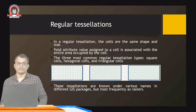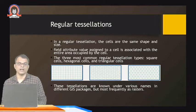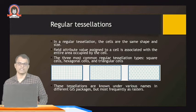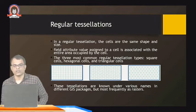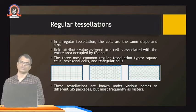There are two types. The first is regular tessellation — in regular tessellation the cells are of the same shape and size, and the field attribute value assigned to a cell is associated with the entire area occupied by the cell. The three most common regular tessellation types are square cells, hexagonal cells, and triangular cells, as shown in the diagram — all shapes are of the same size.